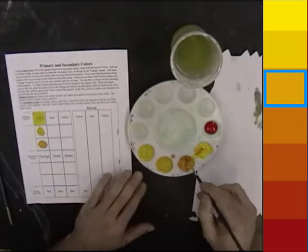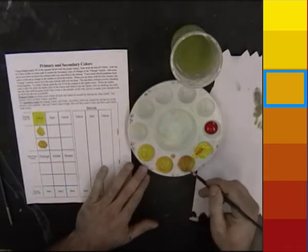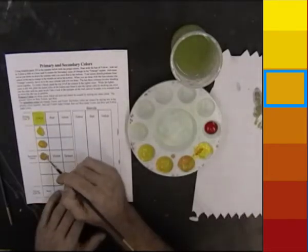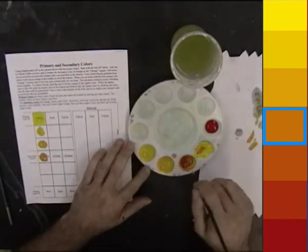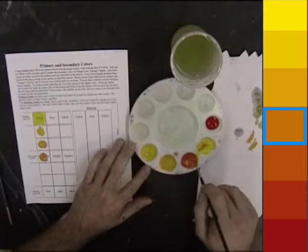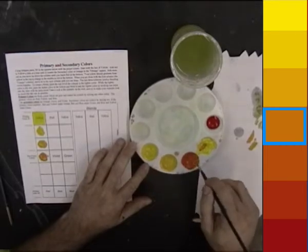Keep adding more red to the yellow with each square that you paint as you move on down the column. The middle square should wind up being a good medium orange. Remember, do not use orange paint. You need to create this orange by mixing red and yellow.